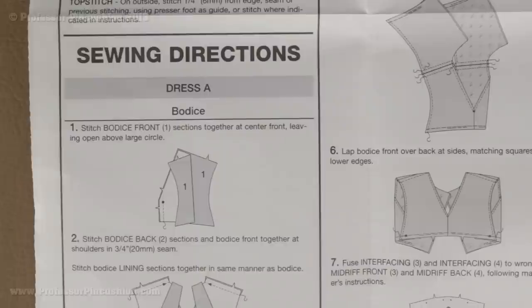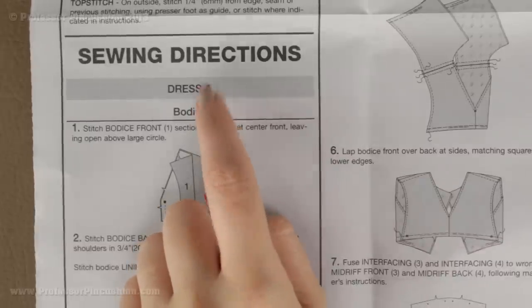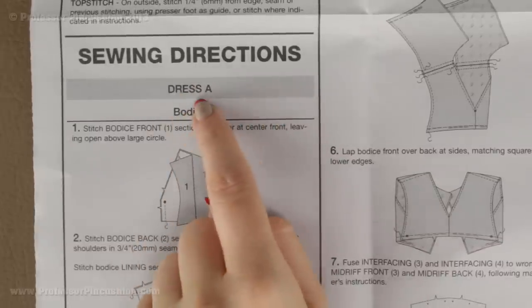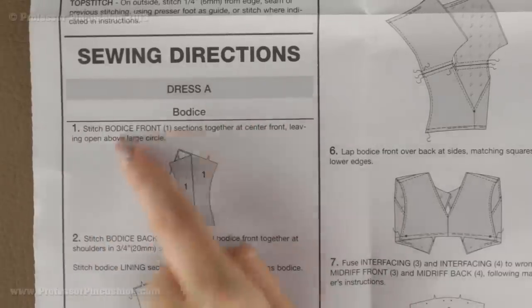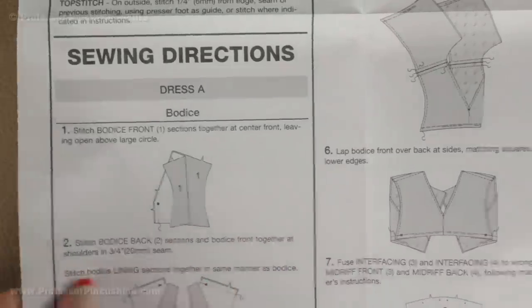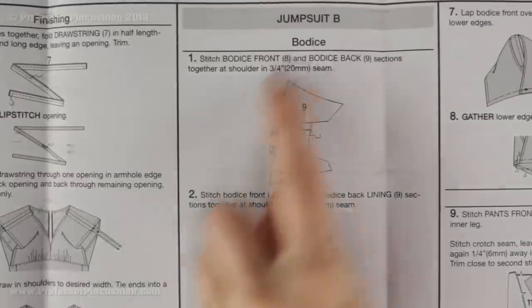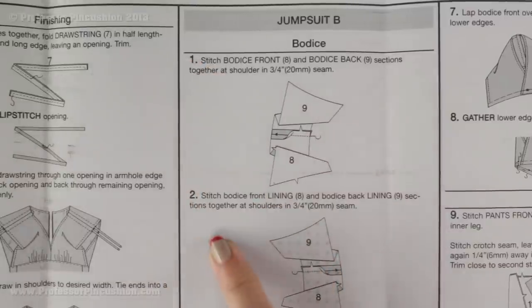You also need to make sure that you are doing the correct view. Sometimes in an envelope there is more than one view and the directions take care of all the views together. So you need to pay attention to make sure you are doing the right one — it is always going to be at the top. So this starts with dress A, step one. If I am doing view B, I am not going to start here; I have to look through the directions. On the back of this page: jumpsuit B, and then it starts with step one again.